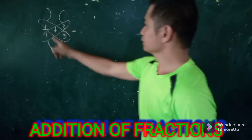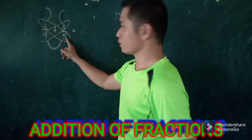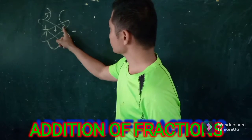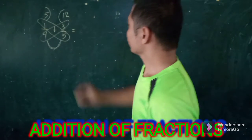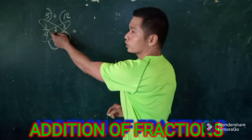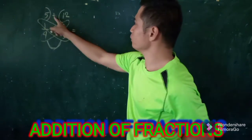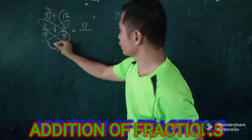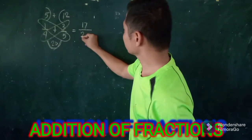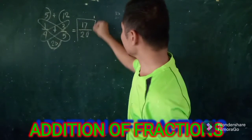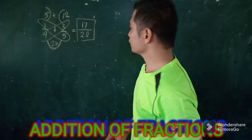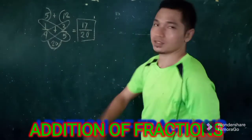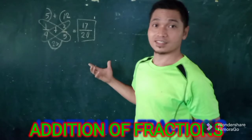Let's find 1 times 5, which is 5, and then 4 times 3 is 12. Since we have these two results, we add them: 5 plus 12 is 17. Then multiply the denominators: 4 times 5 is 20. So our answer is 1/4 plus 3/5 equals 17 over 20.